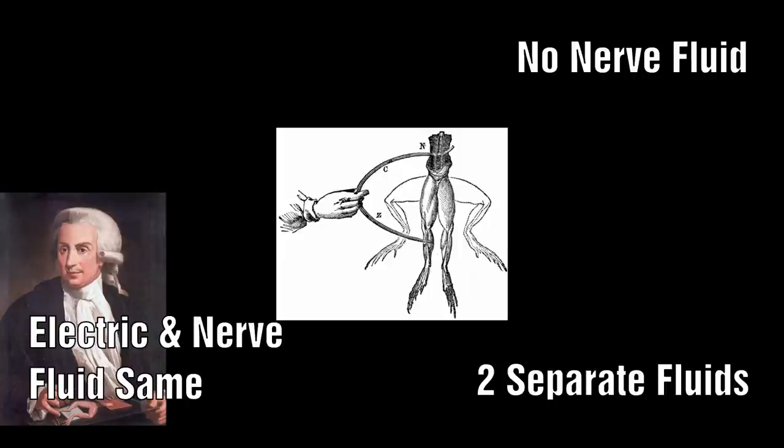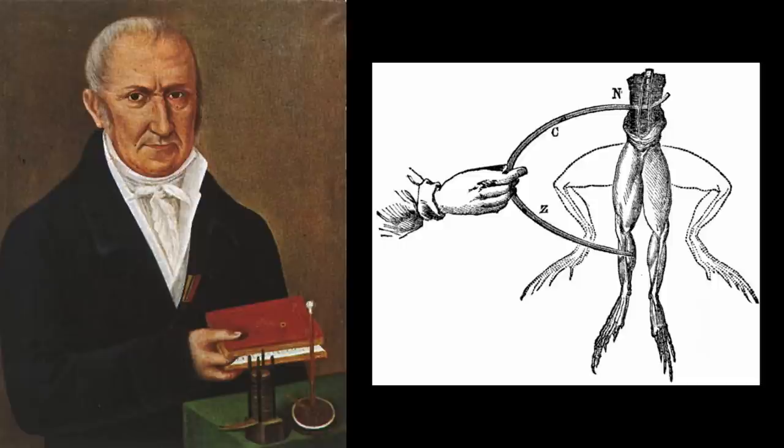Alessandro Volta was firmly in the latter camp. In 1792 he put forward the view that the stimulus in Galvani's experiments is derived essentially from the connection of two different metals by a moist body.